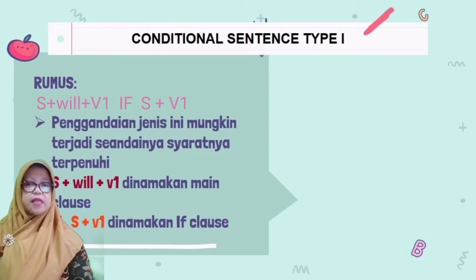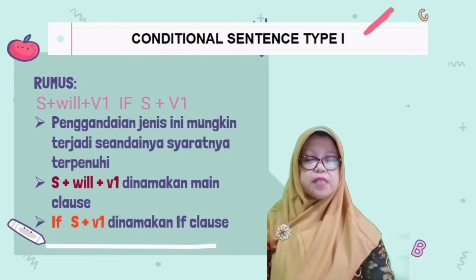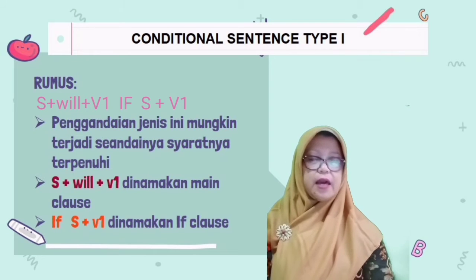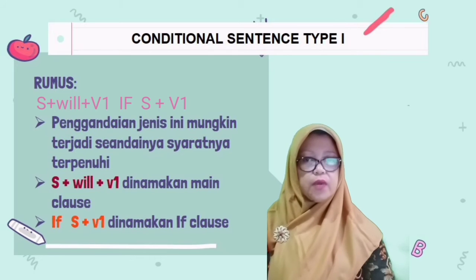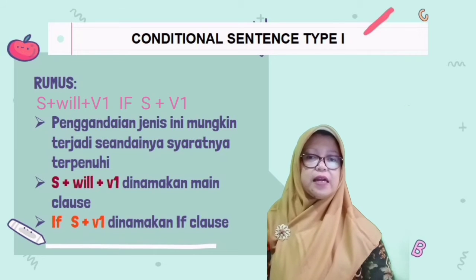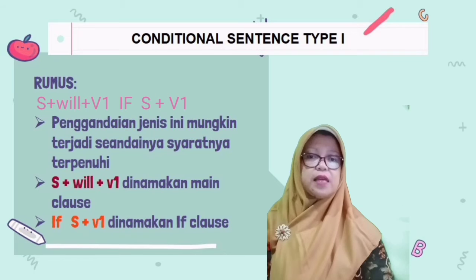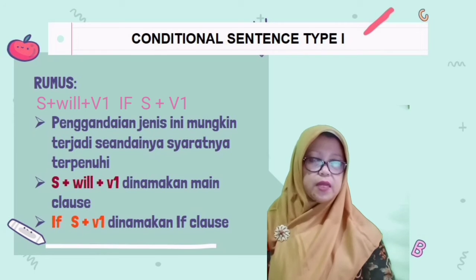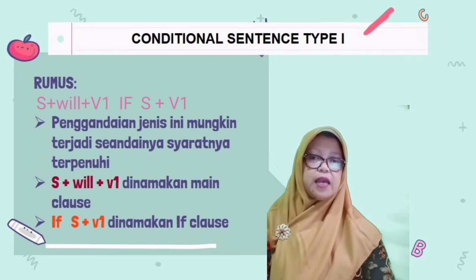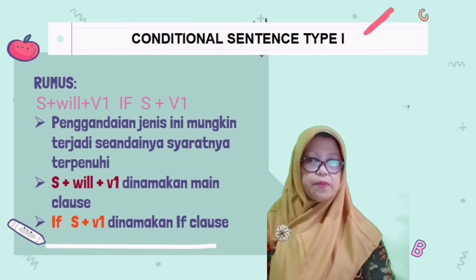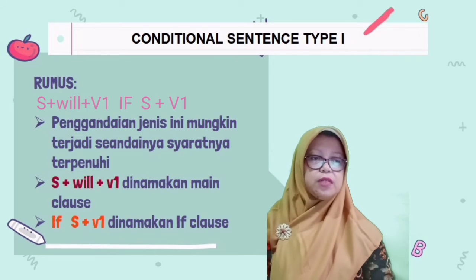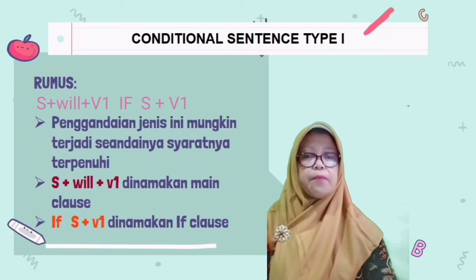Di dalam conditional sentence type 1, rumus yang kita pakai adalah: Subject diikuti modal will, diikuti kata kerja pertama — itu dinamakan main clause atau kalimat utama. Kemudian if diikuti subject, diikuti kata kerja pertama — itu dinamakan if clause atau kalimat pengandaian.